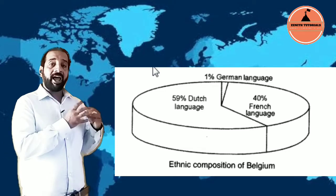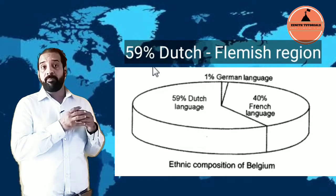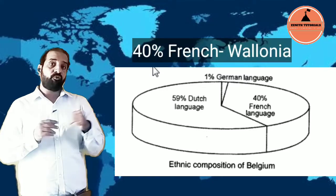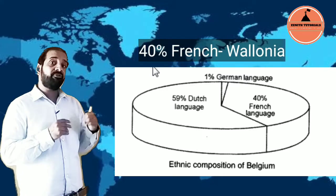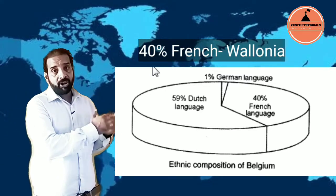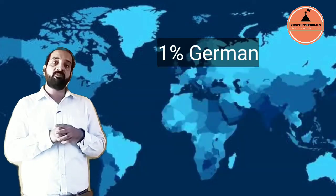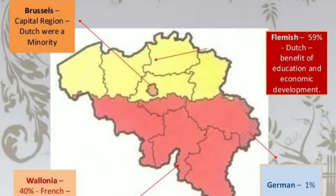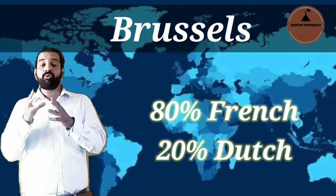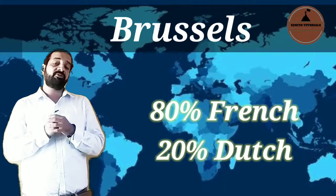There are 59% Dutch-speaking people in Belgium; they stay in the Flemish region. 40% are French people; they stay in Wallonia. There is only 1% German population. Brussels, which is the capital of Belgium, has a very different demographic — it has 80% French and only 20% Dutch population.